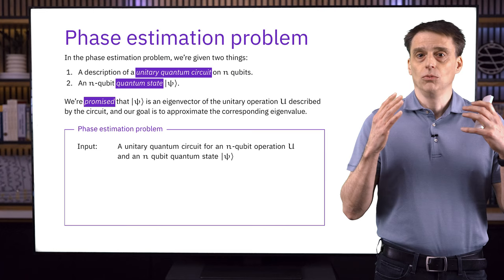Now we can state the order-finding problem, which is simply to find the order for a given element in Z_n*. The input is two positive integers a and n for which the gcd equals 1, and the output is the smallest positive integer r such that a^r ≡ 1 (mod n). This is believed to be a computationally difficult problem — no efficient classical algorithm is known. The problem is at least as hard as integer factorization; in fact, the two problems are computationally equivalent: an algorithm for order-finding can solve factoring, and vice versa.